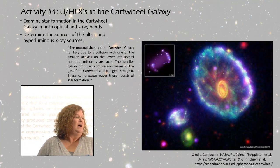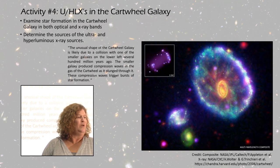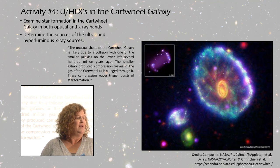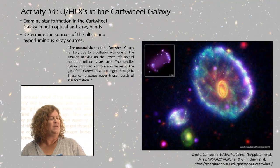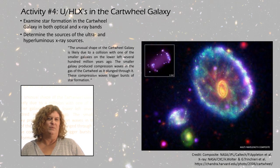The last one is looking at star formation in the Cartwheel Galaxy and looking at ultra and hyperluminous x-ray sources to determine what the sources of these x-rays might be. In the image you see, the big image is a composite from different missions and wavelengths. In the top left corner, you see the x-ray image from Chandra showing the different x-ray sources.